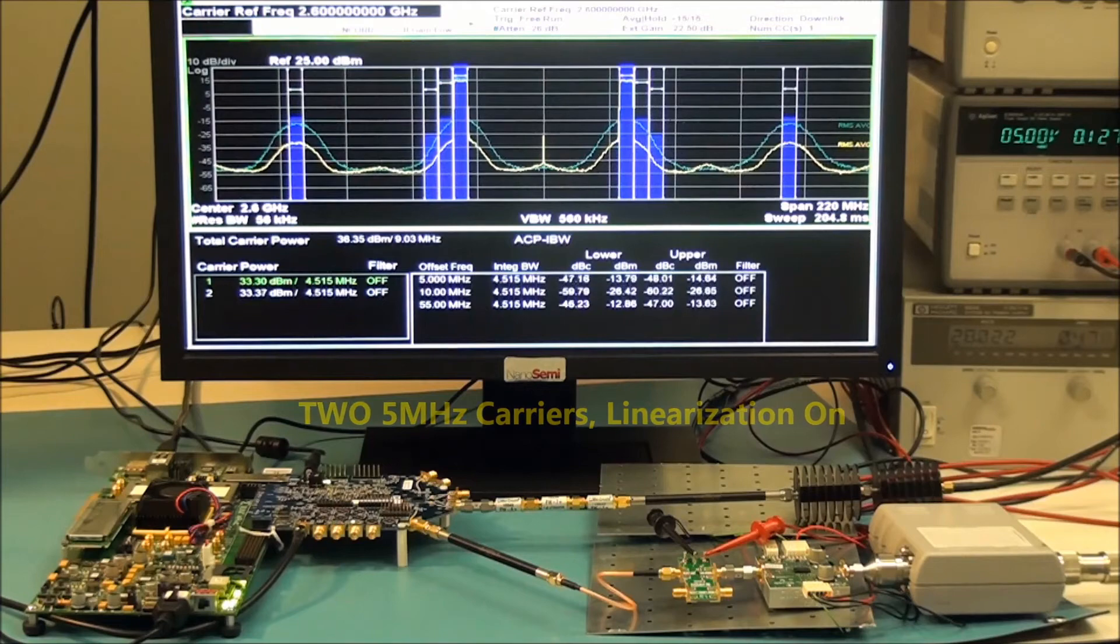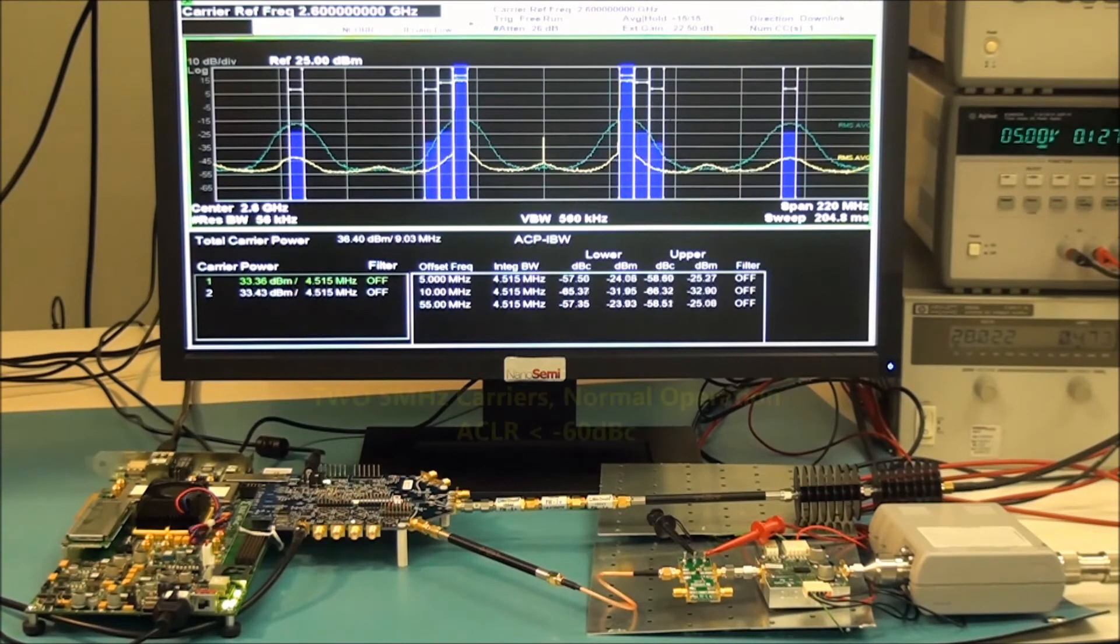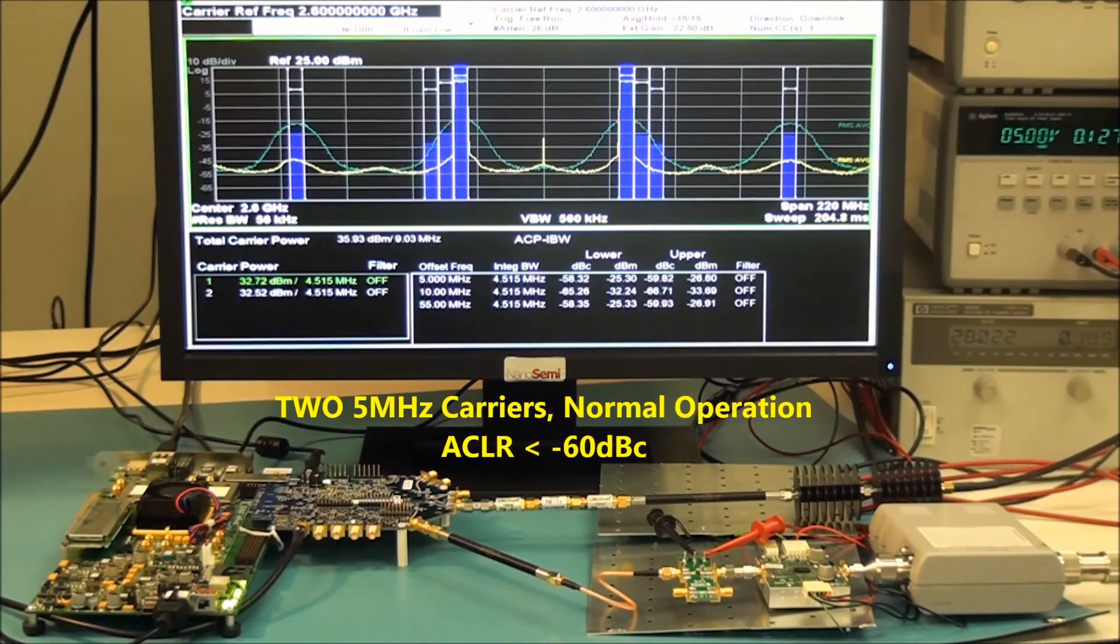Last but not least, we are showing you a dual 5 MHz carriers configuration where carriers are spaced 55 MHz apart, center to center. While the linearizer is on, we can quickly achieve minus 60 dBc.